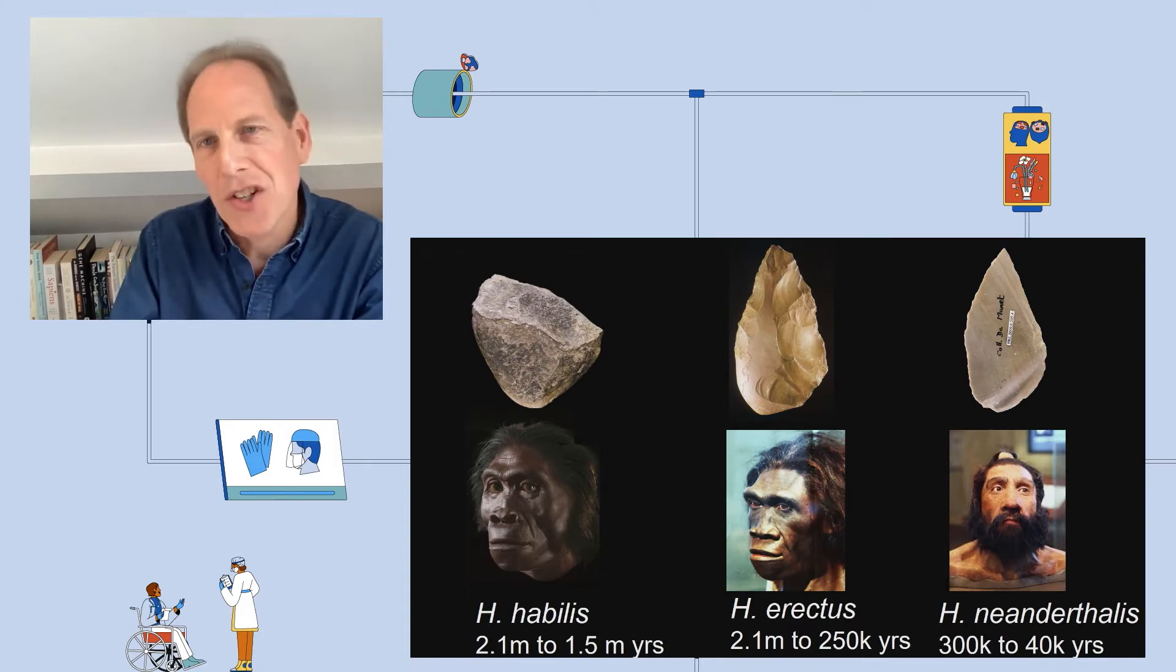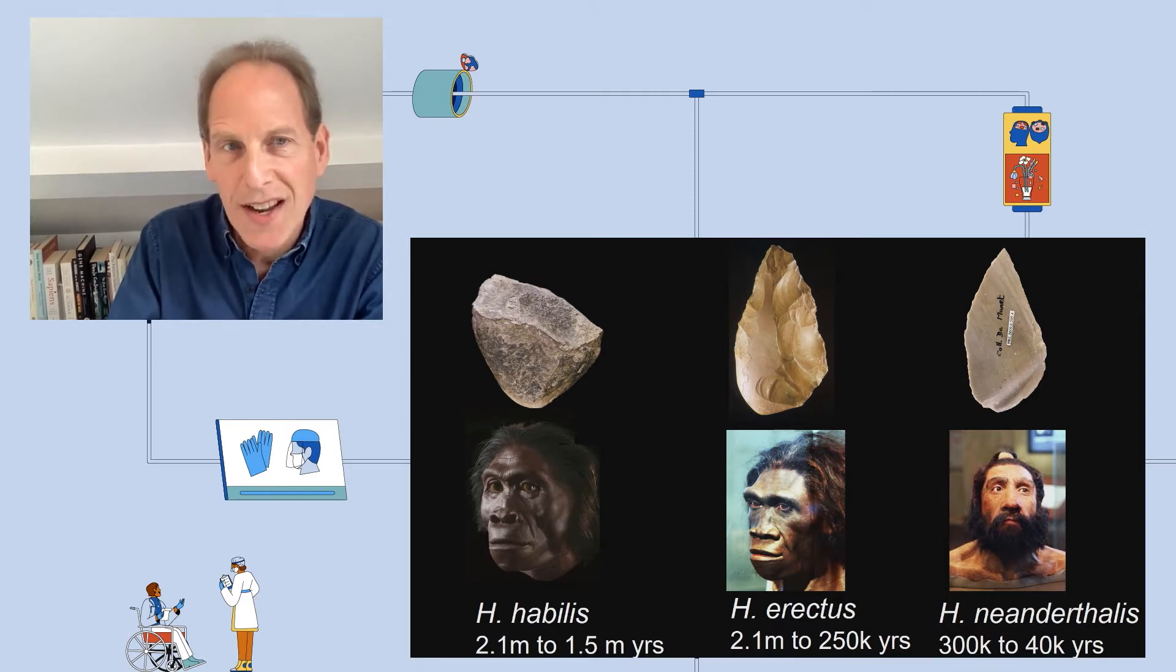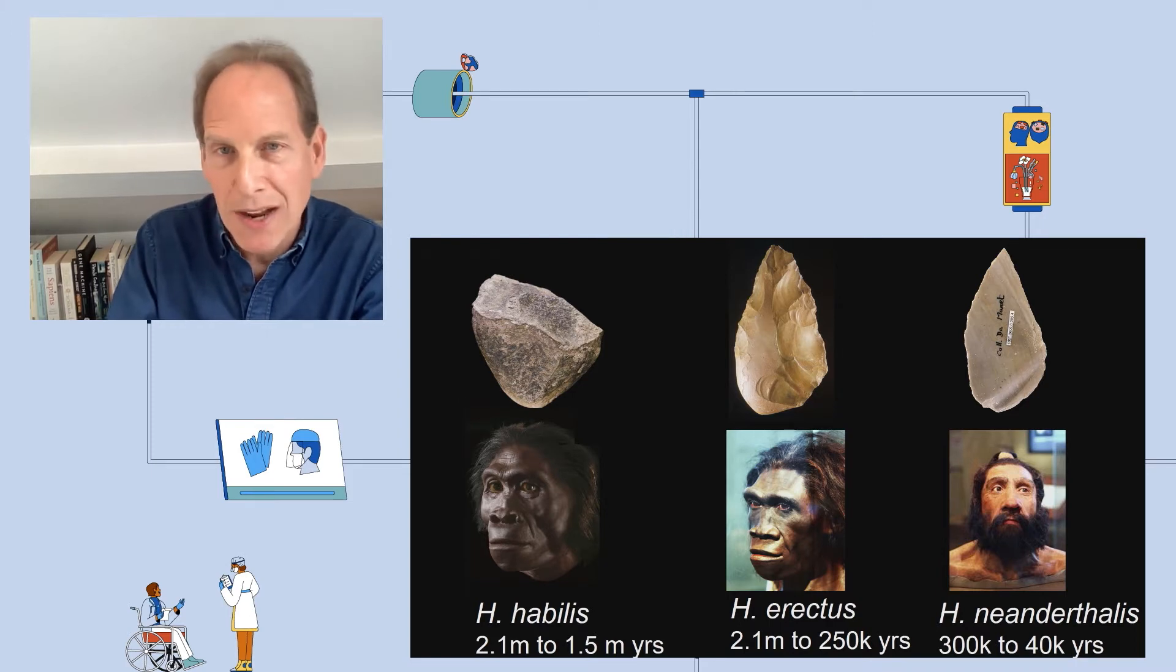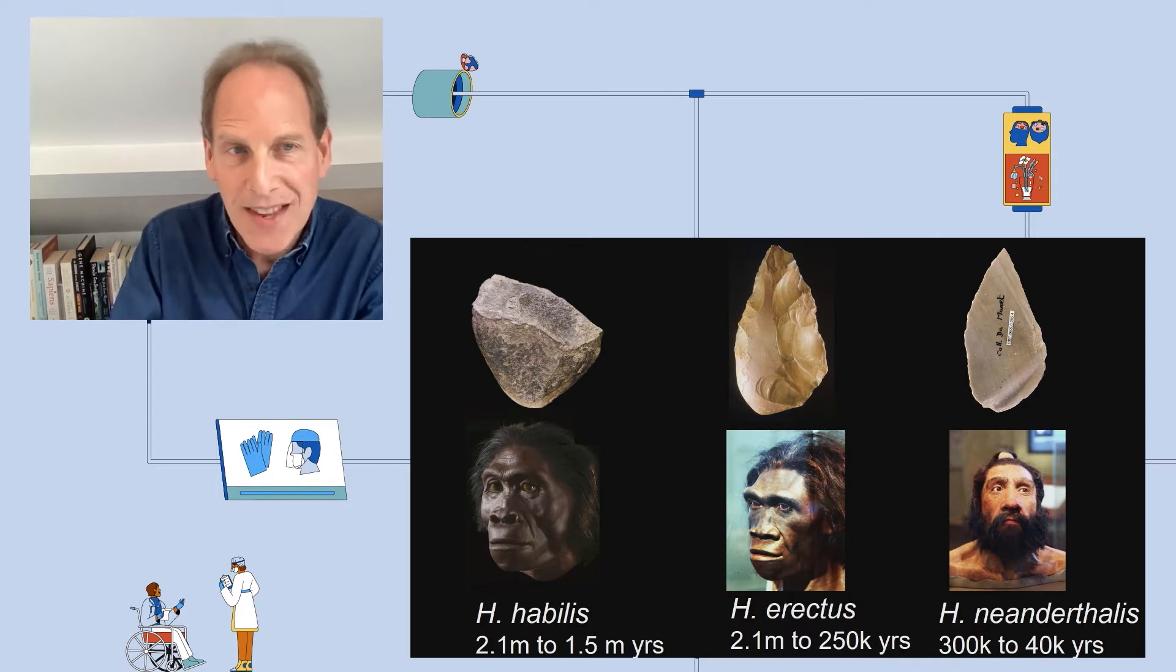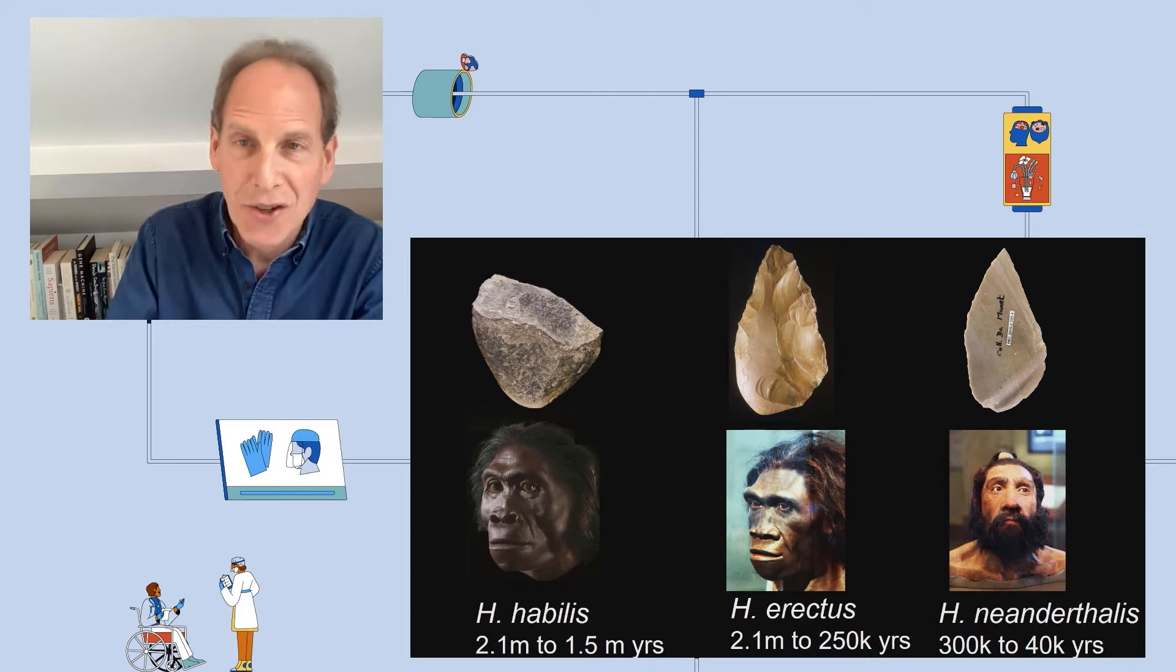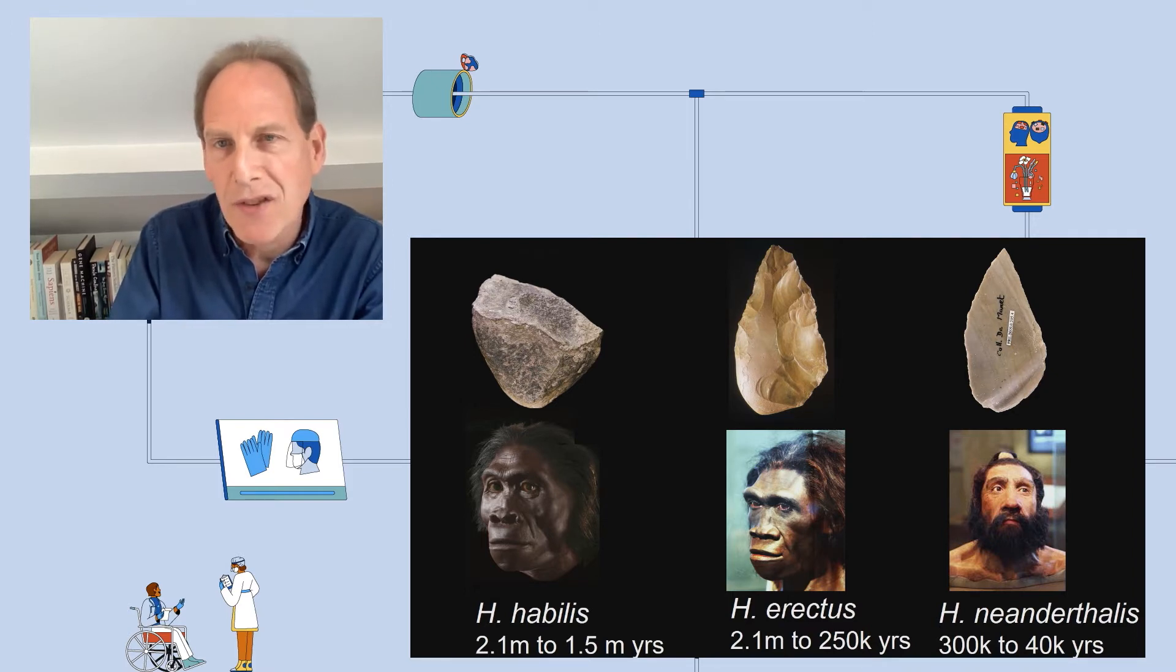What's clear from the archaeological record is that our hominid ancestors could use simple stone tools. For example, Homo habilis and Homo erectus, who both lived about two million years ago, could use stone axes and hammers. And so could the Neanderthals, who lived as recently as 40,000 years ago. But despite small changes in the design of their tools, for millions of years there was little evidence of what I call generative invention. That's the ability to invent in multiple ways, not just as a one-off.